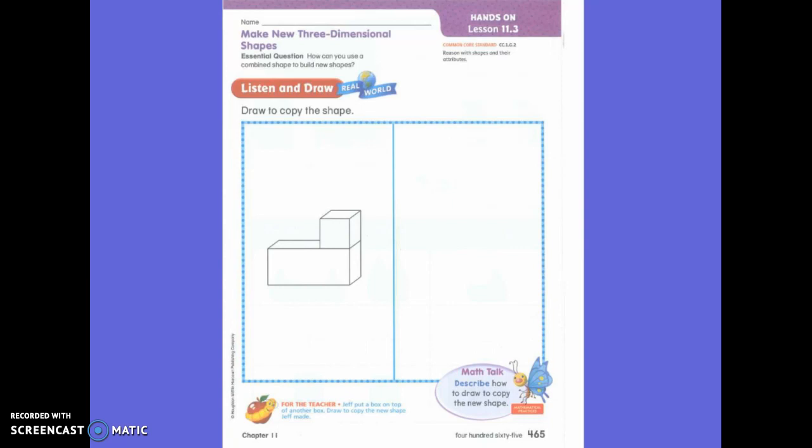Describe what the larger box probably is. What shape it probably is. A cube. A rectangular prism. Very good. A rectangular prism.